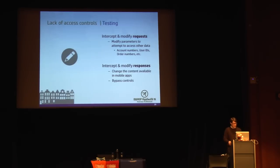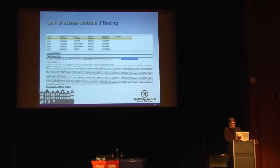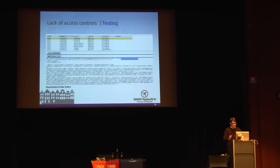For testing access controls, intercept and modify requests and modify all parameters just as you would in traditional web testing. Attempt to enumerate through account numbers, user IDs, and order numbers. Also intercept and modify responses — particularly in mobile applications — where changing responses can expose admin functionality not normally shown in the client. OWASP ZAP has various fuzzers built in for REST-based services. In one mobile app I tested, I noticed I could enumerate through order IDs and access not just my own orders but other users' orders as well — very typical of APIs that don't properly authorize their back-end objects.